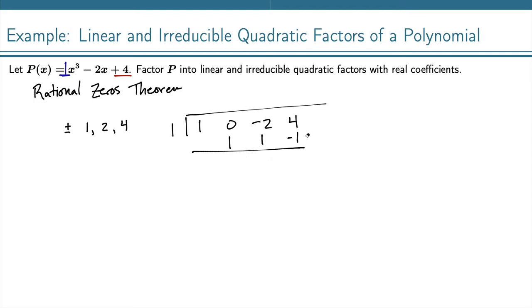So let's move on and try the next number. Let's try 2. Put a 2 here, bring the 1 down, multiply, add, multiply, add, multiply, and add. We didn't get a 0 here, so that didn't work either.